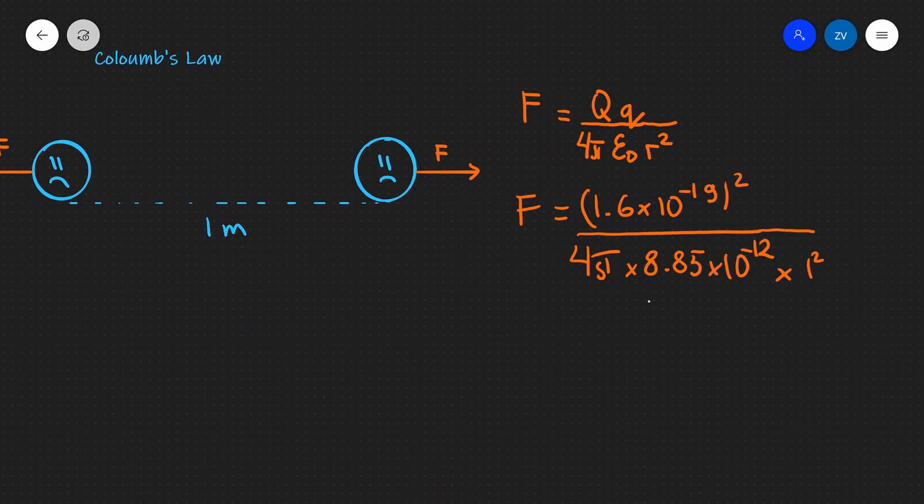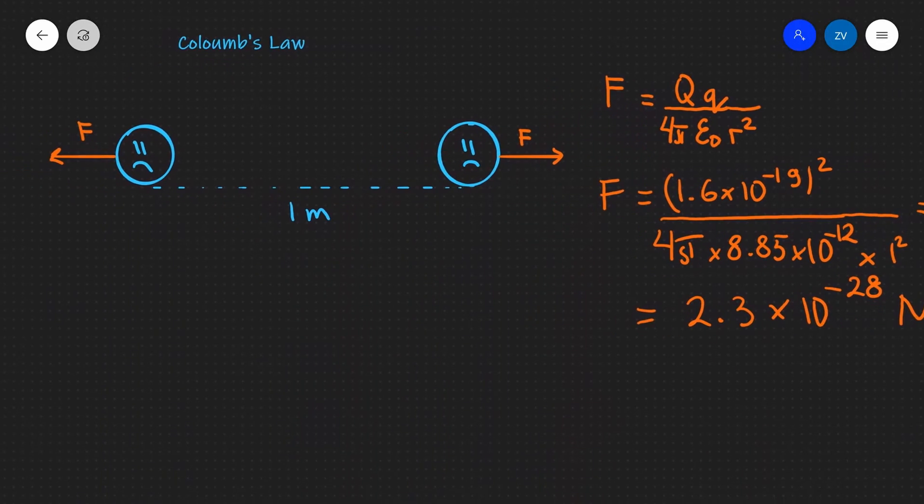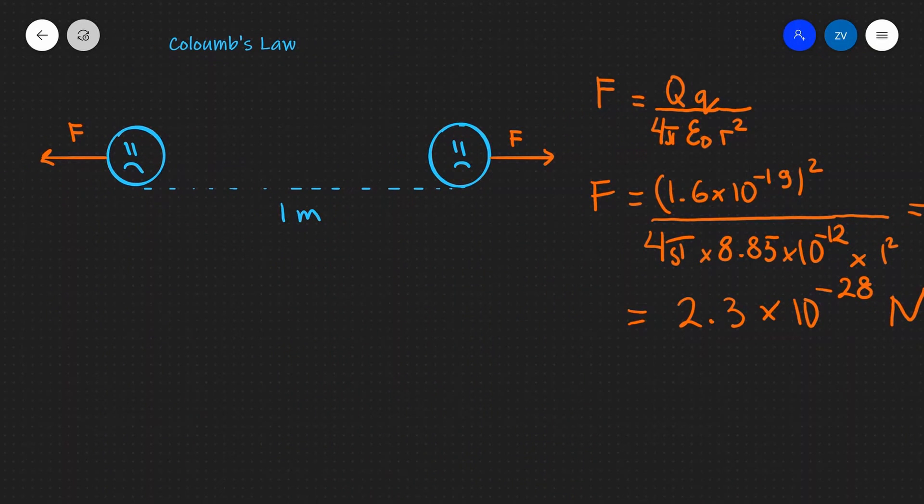And if we input this into our scientific calculators we are going to get a value of approximately 2.3 multiplied by 10 to the power of minus 28 newtons. So if we have two electrons which are a meter apart, they're going to experience a force of 2.3 times 10 to the power of minus 28 newtons.